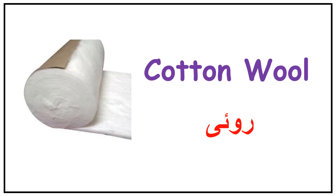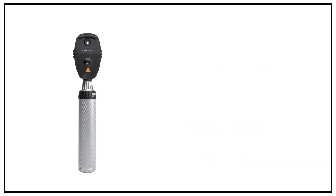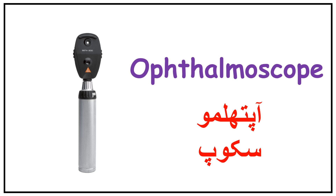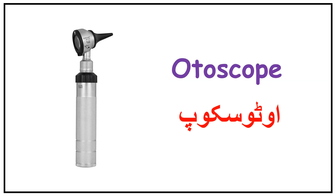Cotton wool — cotton wool. MRI machine — MRI machine. Ophthalmoscope — ophthalmoscope: an instrument used to check the eye. Microscope — microscope. Otoscope — otoscope: a device used to look inside the ear.